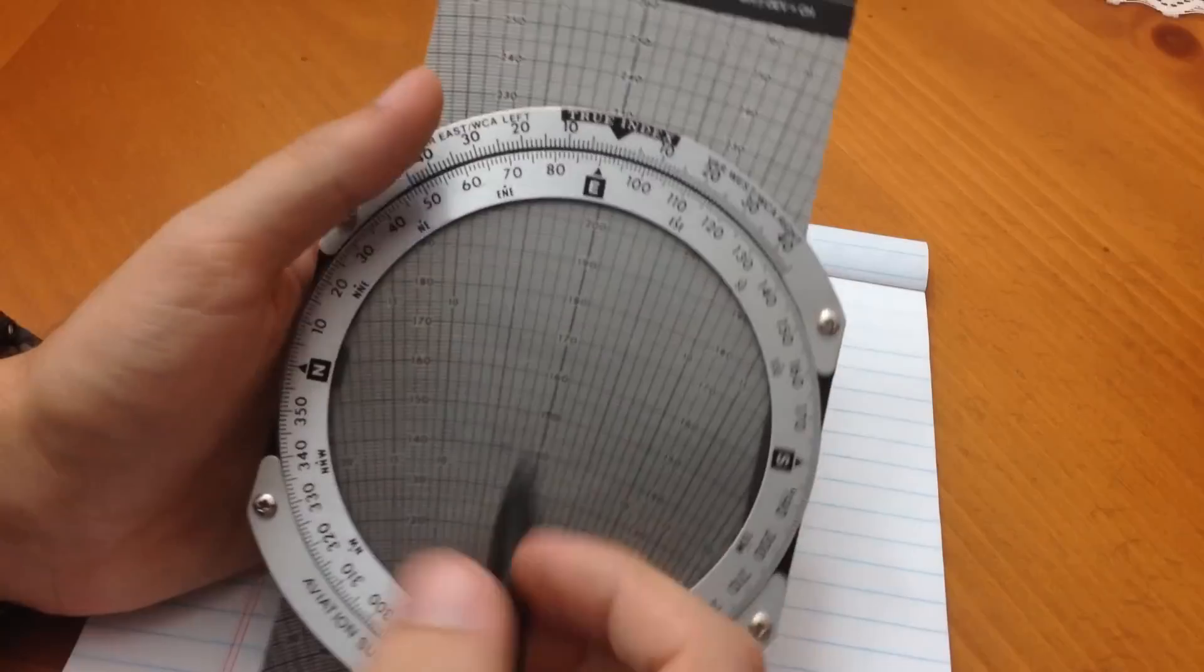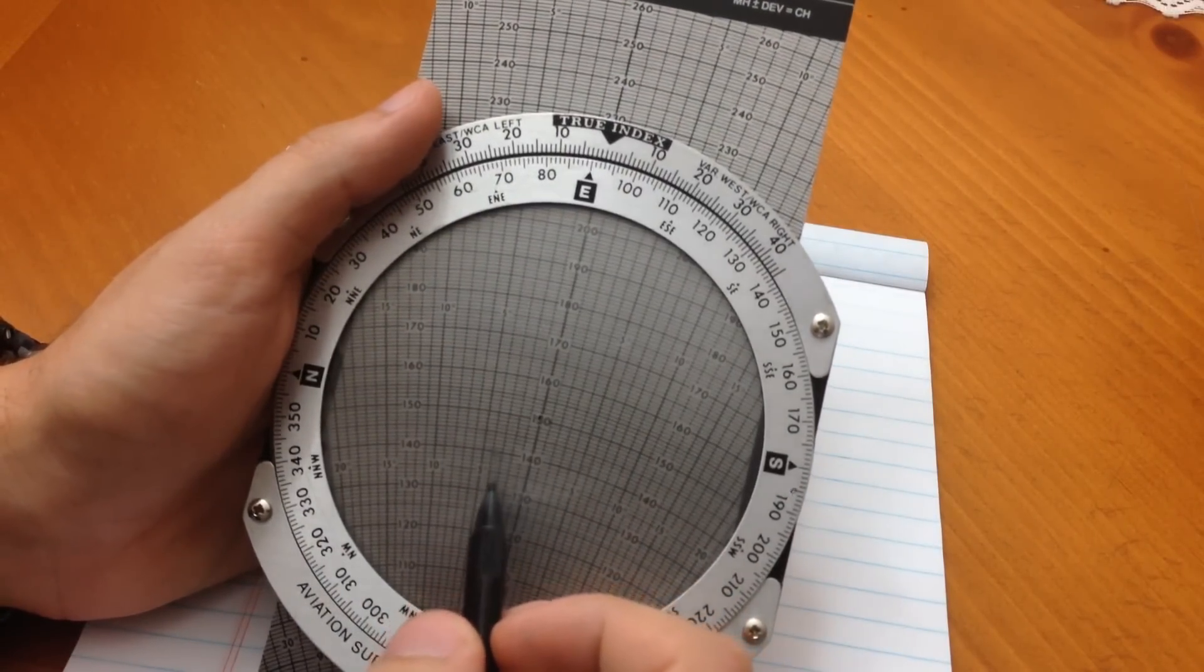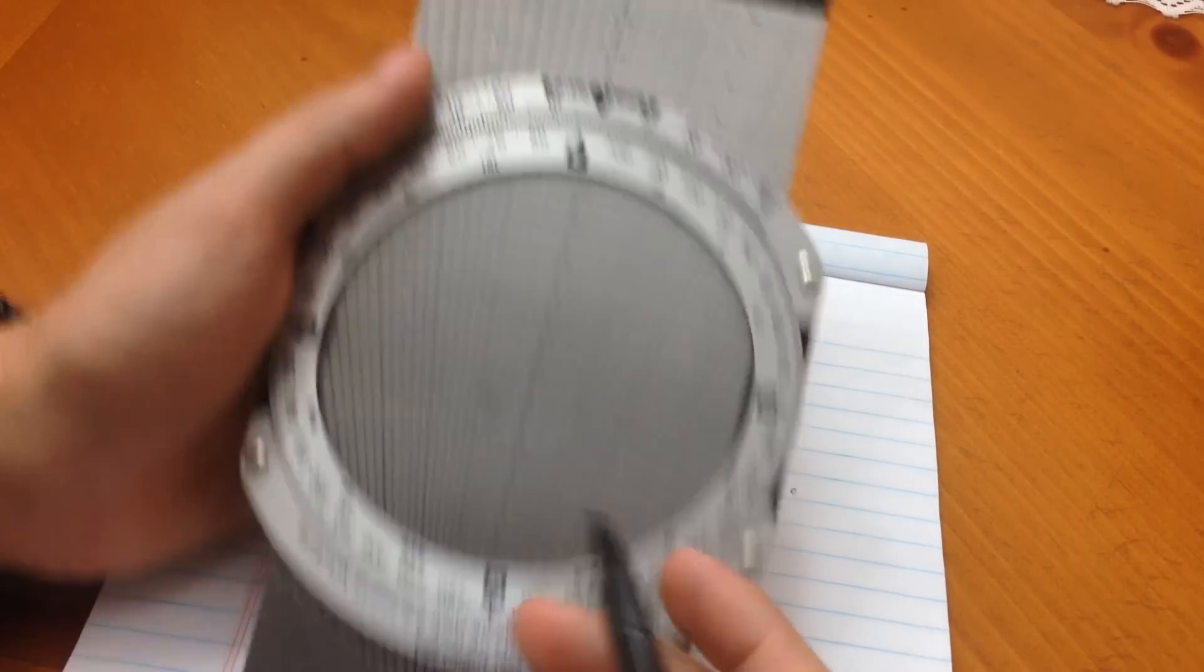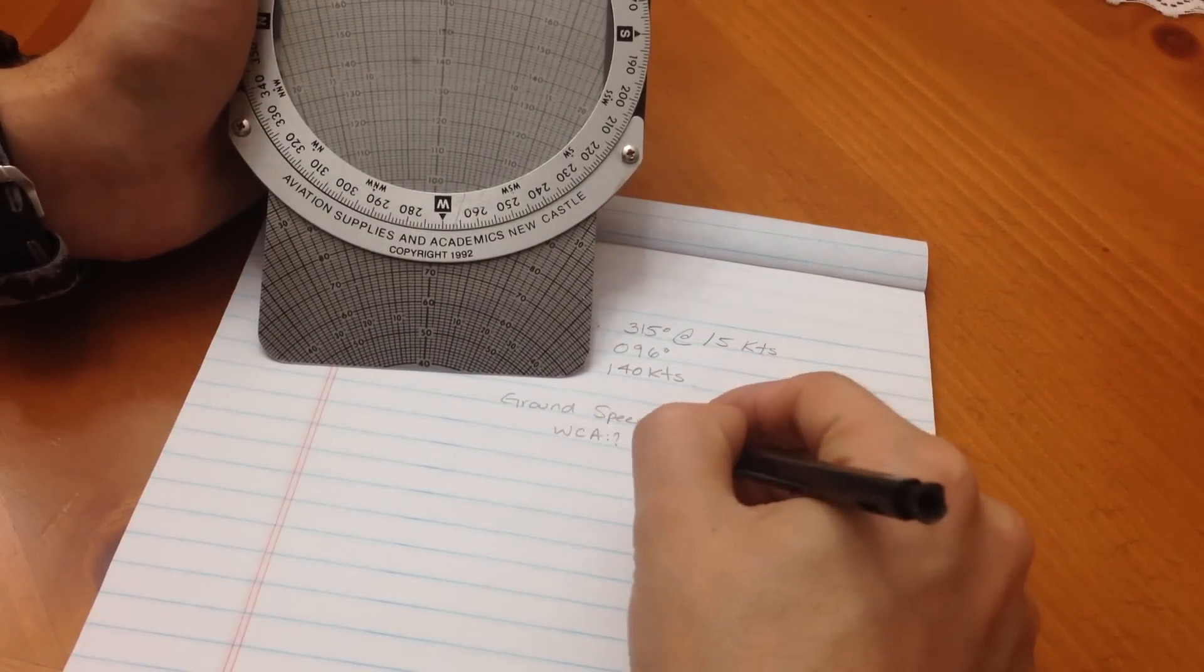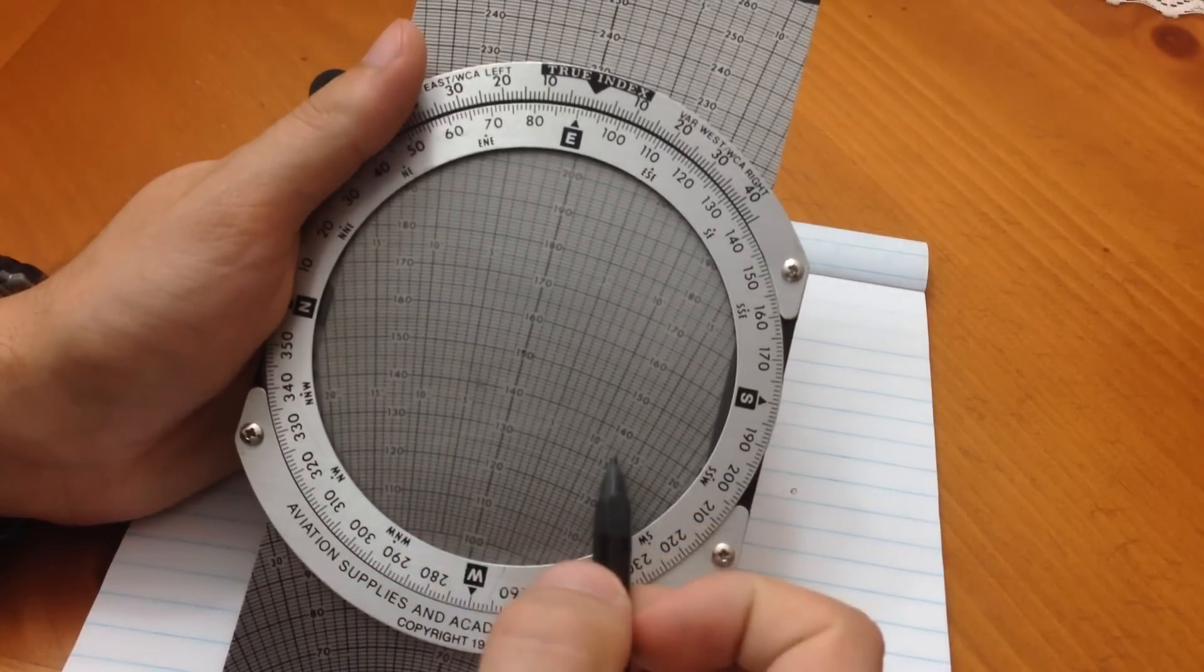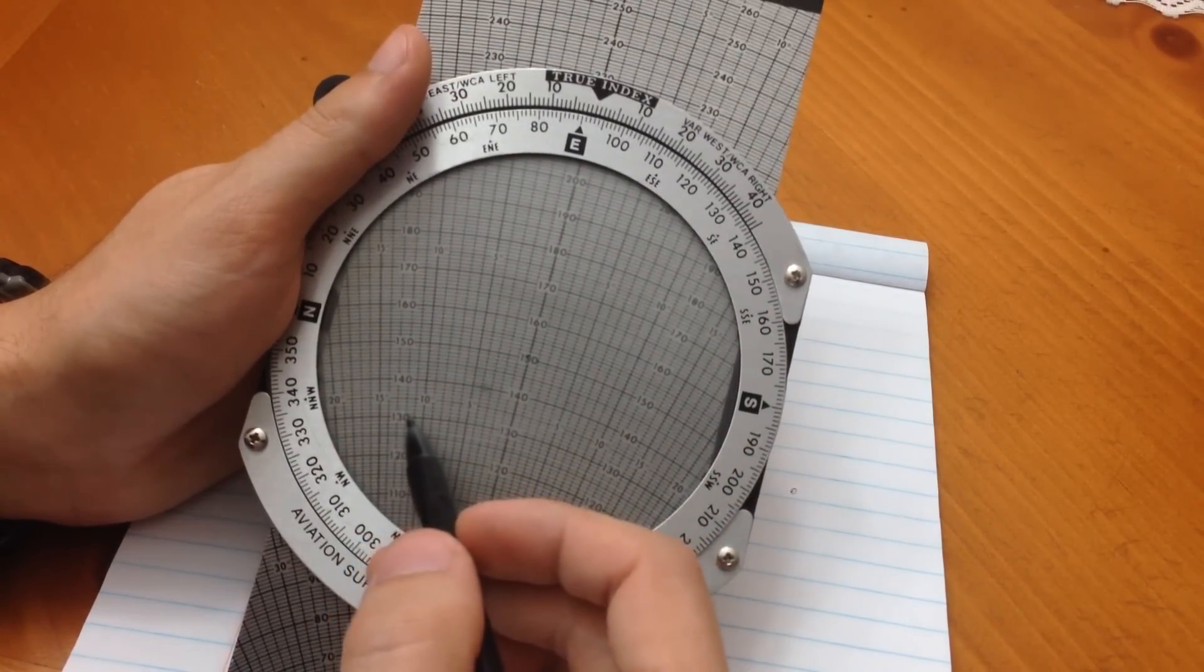And our wind correction angle, in this example, is going to be, let's see here, I'll go for negative four. So, why negative four, why plus four. If it's to the right, you're going to add. And if it's to the left, then you're going to subtract.